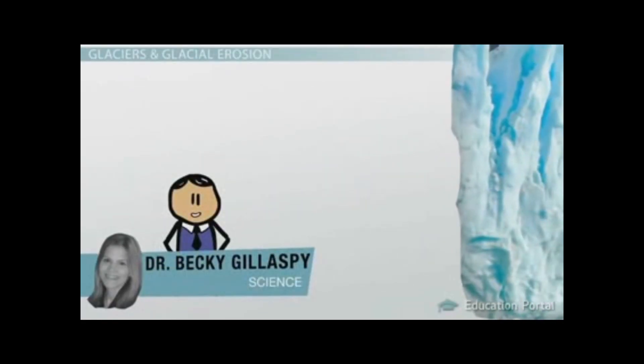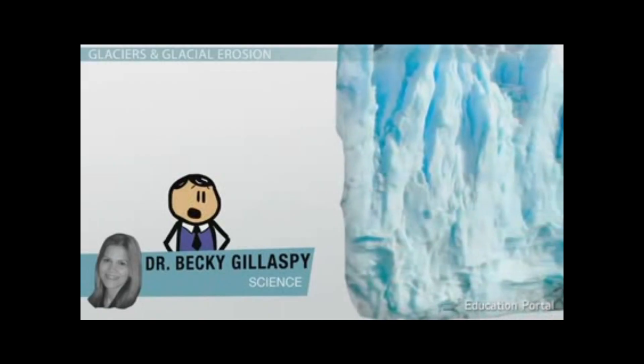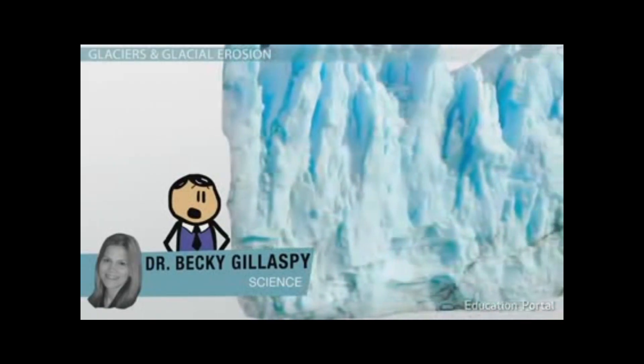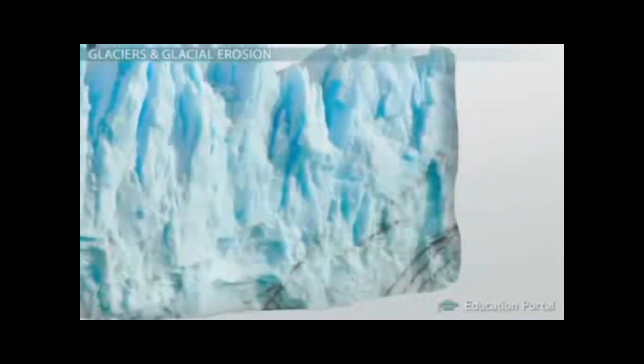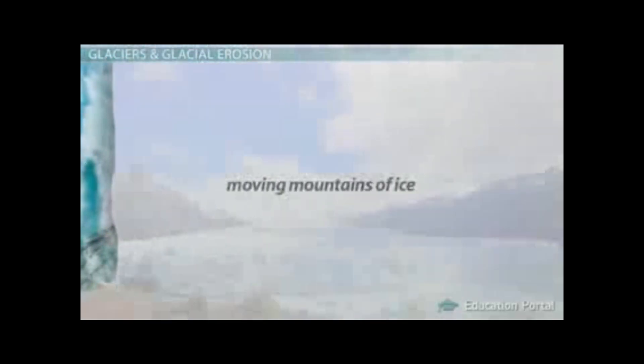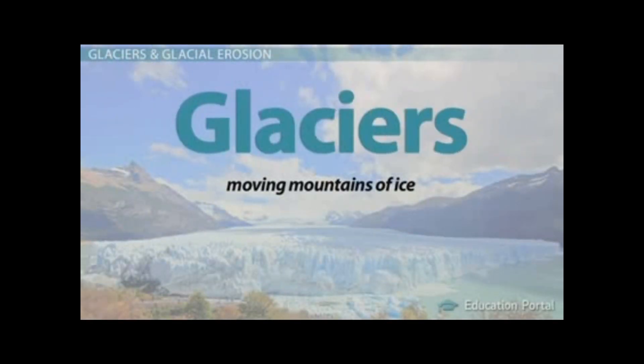If a block of ice the size of a mountain is moving towards you, what should you do? Well, if it were me, I would get out of the way. These moving mountains of ice do exist, and we call them glaciers.